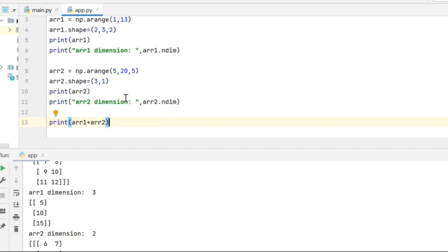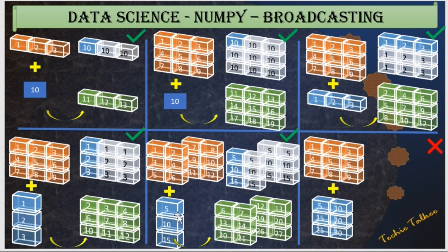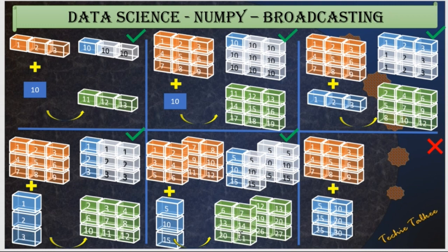When adding array 1 and array 2, NumPy conceptually creates two 2D arrays with the first column values as 5, 10, 15 in both, then broadcasts those values across the other columns in each respective 2D array. The addition then adds the 2D array at index 0 from array 1 with the 2D array at index 0 from array 2. For example, 1 plus 5 gives 6, and 2 plus 5 gives 7, generating the first 2D array result.